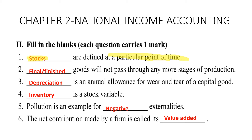Second: final goods will not pass through any more stages of production — write 'final goods,' not 'finished goods.' These are the ultimate products that have passed through the entire production process.